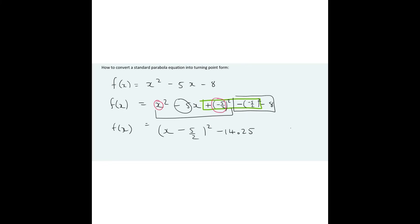So what this now tells us is that the turning point x value is 5 over 2, and the turning point y value is minus 14.25. Of course, you could work out the turning point of this equation by using the turning point formula for x, which is minus b over 2a. Then once you find the x value, you could substitute that back into that equation to get the y value.